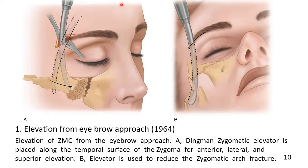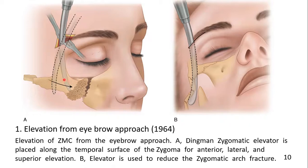The Dingman elevator is passed through the incision behind and lateral to the orbital margin into the infratemporal fossa. The elevator may be passed either under the zygomatic arch to lift it laterally, or under the body of the zygoma to lift it upward, forward, and outward. You can also use a Rose elevator, Sole elevator, or any other heavy periosteal elevator with a broad end.